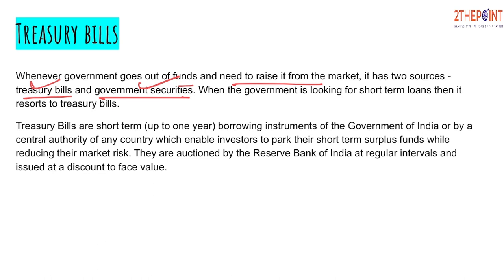What is the difference between these two? Treasury Bills have a maturity of less than one year, meaning the money will come back within one year. Government Securities, on the other hand, are issued when the government needs long-term funds, and their maturity period is more than one year.